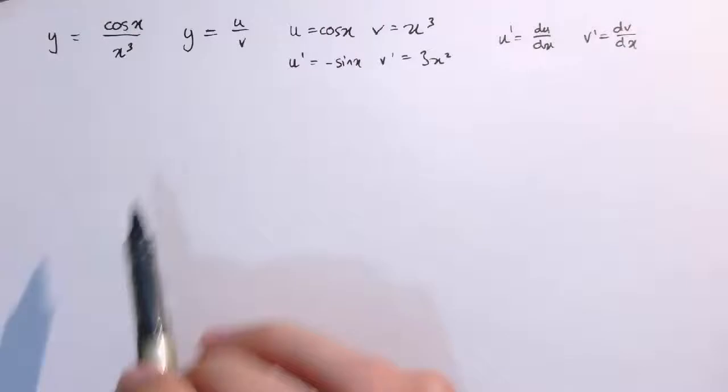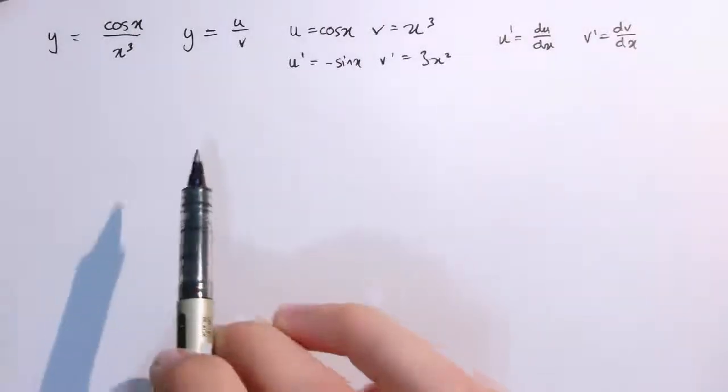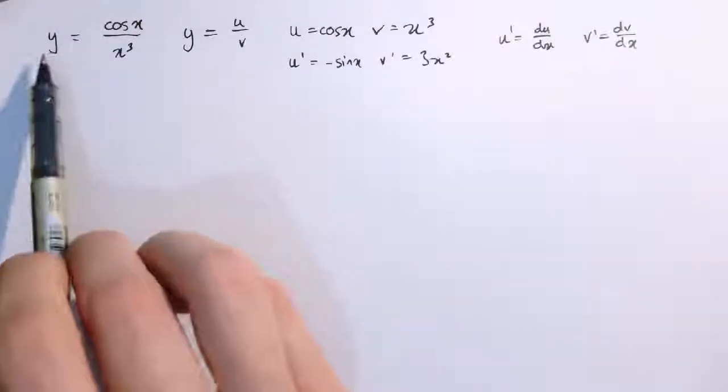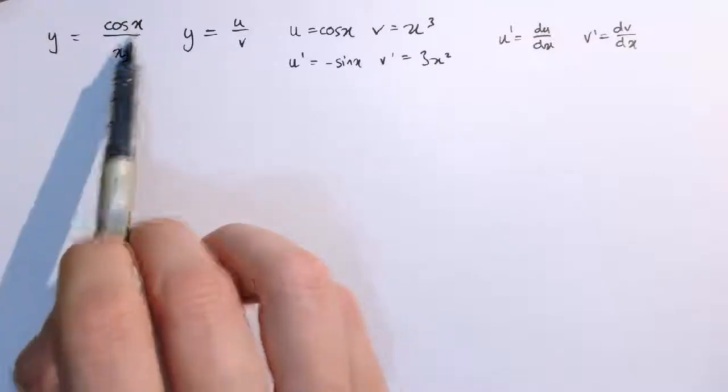In this video we're going to prove the quotient rule from the chain and the product rules. The quotient rule allows us to differentiate functions like this, y equals cos x over x cubed.